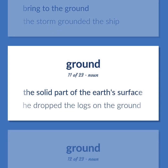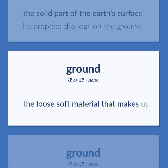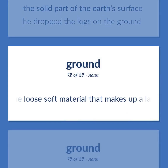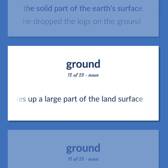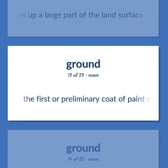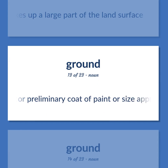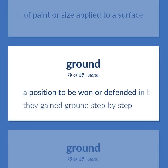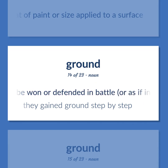The solid part of the earth's surface. He dropped the logs on the ground. The loose soft material that makes up a large part of the land surface. The first or preliminary coat of paint or size applied to a surface. A position to be won or defended in battle, or as if in battle. They gained ground step by step.